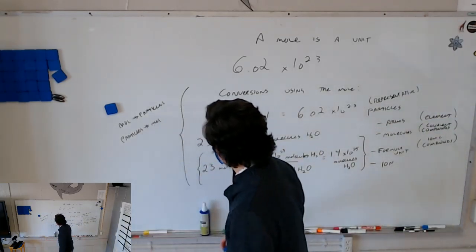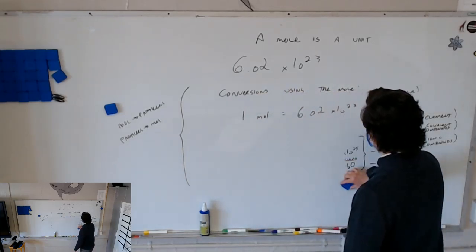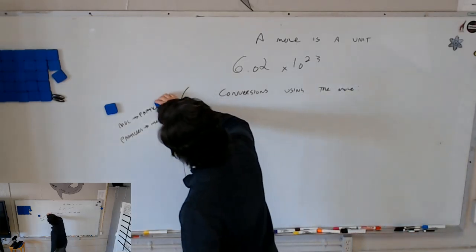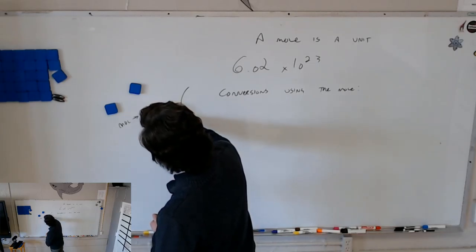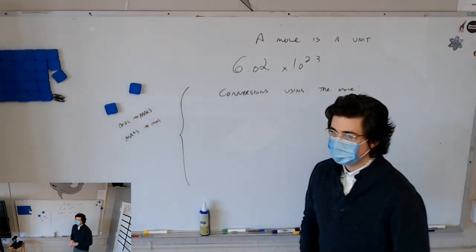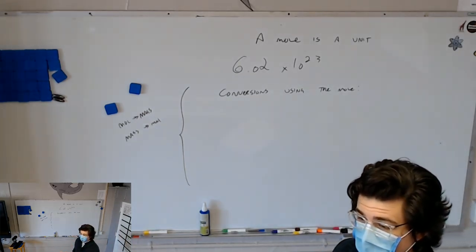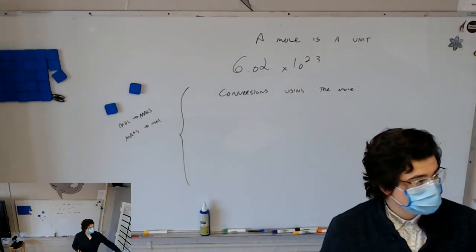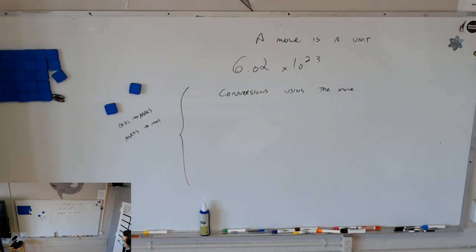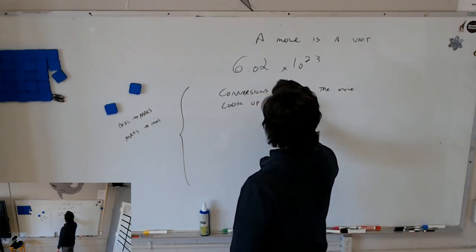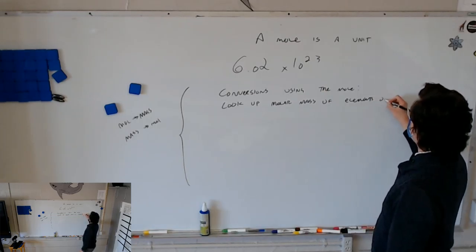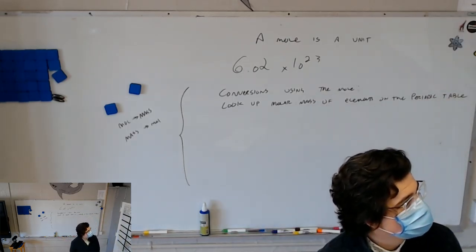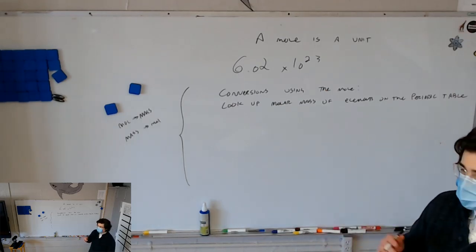Now we're going to convert mass to moles, or moles to mass. For this we need a conversion factor. Unlike the one we just did, these will be different for each element. We look at the periodic table, which tells us the molar mass of each element. The unit is given as AMU — atomic weight — but we write it as grams per mole. The number given on the periodic table is grams per mole.